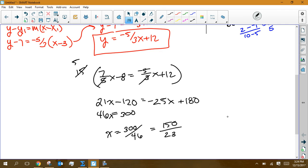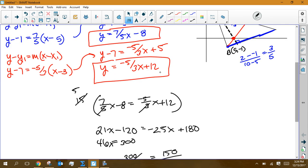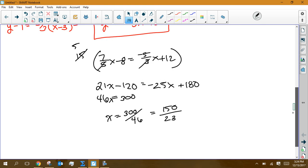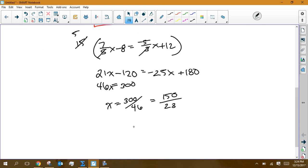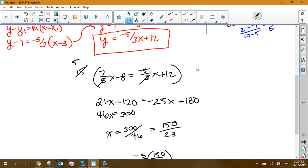Now that I've got that, I'm going to take that 150 over 23. I'm going to plug it back into either one of these equations. It doesn't really matter. I think they're both probably as complicated as either. So I go negative 5 thirds, plug in my x of 150 over 23, and then I'm going to add 12 to that.